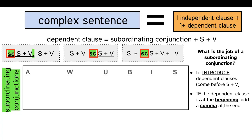I want you to pause the screencast right now and write as many subordinating conjunctions as you can without looking at your list. Your goal is to get to 15. When you have your 15, go ahead and continue the screencast.